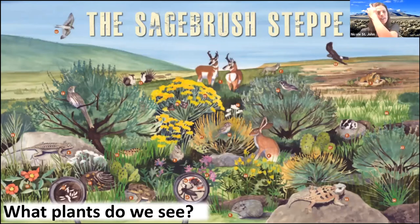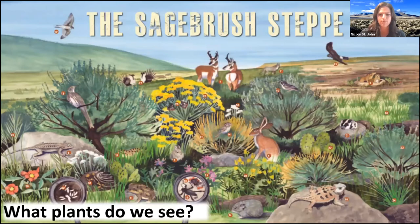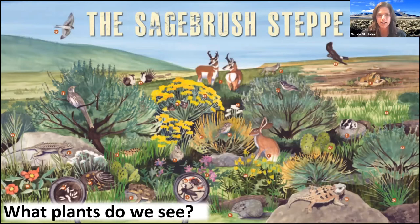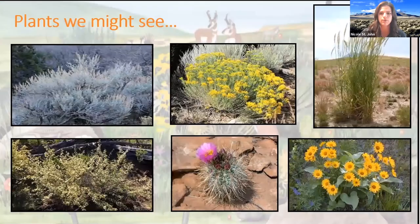It looks like there's a few plants that stick out to us. We're going to go over some of these in specific — some of these are of particular interest to the sagebrush steppe as well. These are some of the common plants that we will see on the landscape and we're going to move into some of these in even more detail.